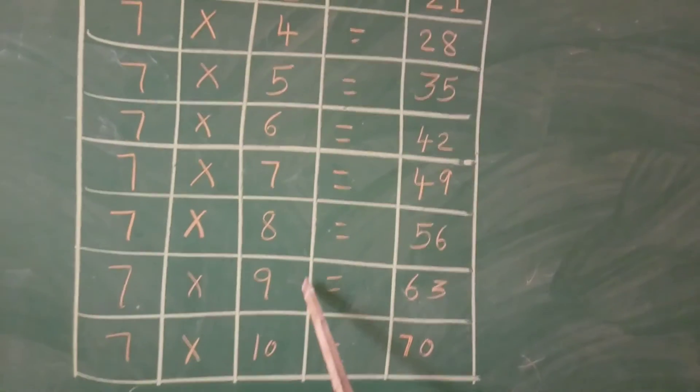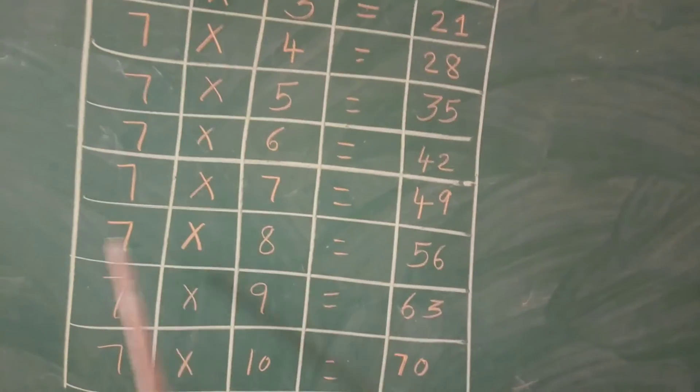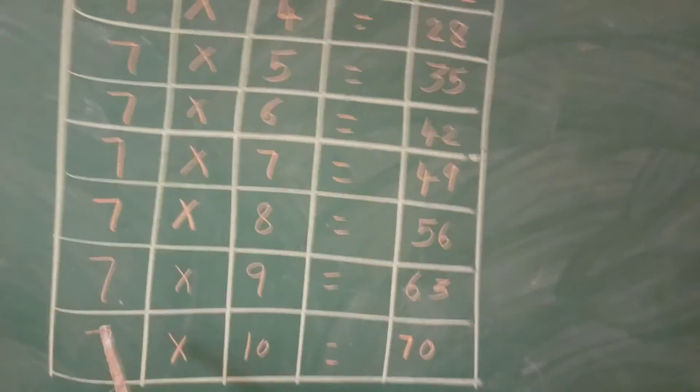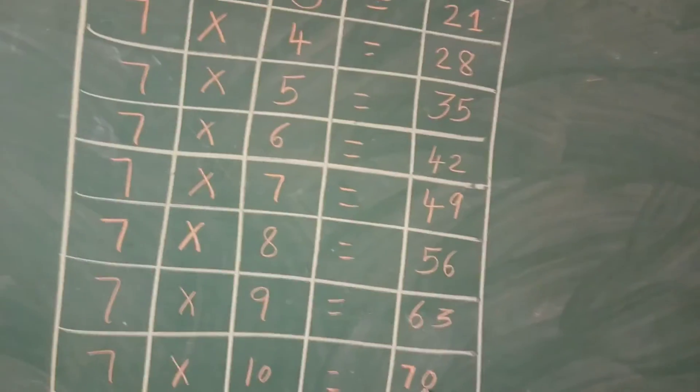7 into 9 is equal to 63. 7 nines are 63. 7 into 10 is equal to 70. 7 tens are 70.